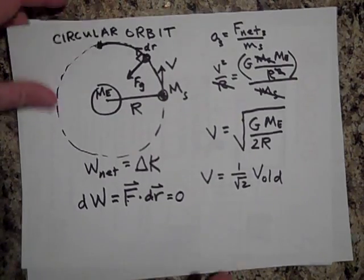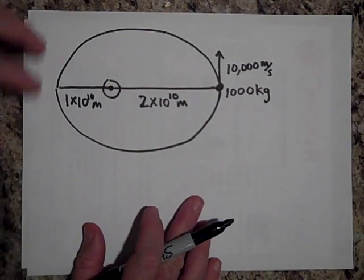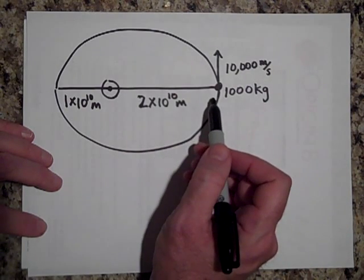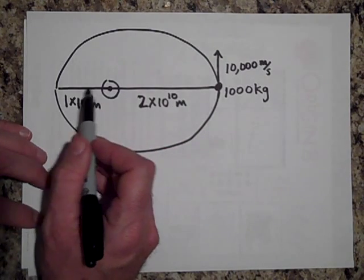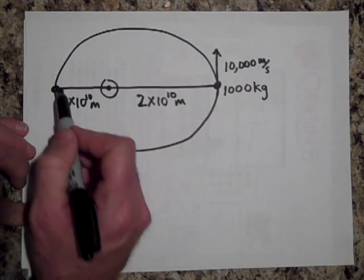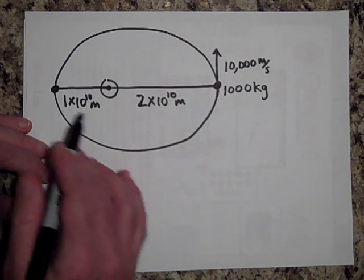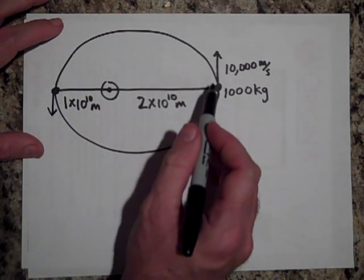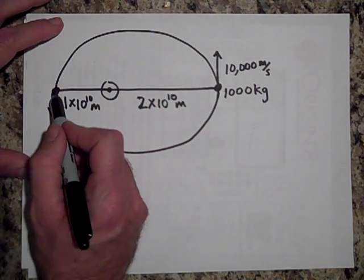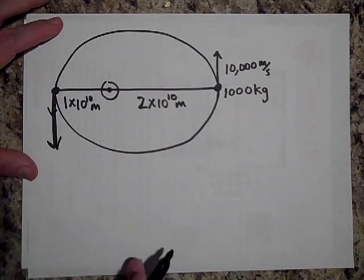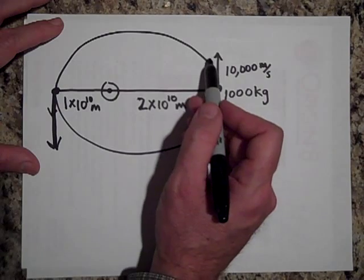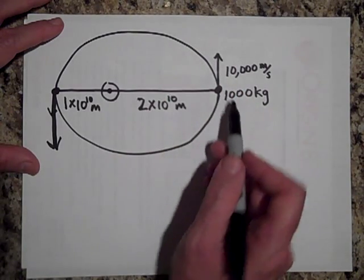Now let's look at an elliptical orbit. A satellite is moving at 10,000 meters per second at a distance of 2 × 10¹⁰ meters from the center. How fast will it be going when it's at 1 × 10¹⁰ meters? The rocket has a mass of 1,000 kilograms. Go ahead and pause. The satellite will speed up as it comes in — it's like falling toward Earth and zipping around.